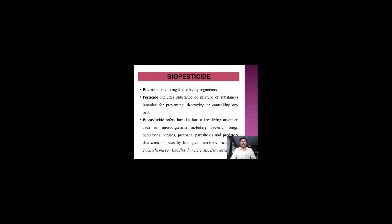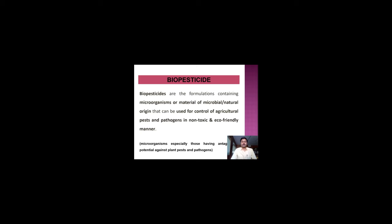Examples include Trichoderma, a well-known biocontrol agent, and Bacillus thuringiensis, used for controlling plant-eating insects. Beauveria is also a fungus used to control insect pathogens in agricultural fields. Biopesticide can be defined as a formulation based on microorganisms or material developed from microbial or natural origin, used for controlling agricultural pests and pathogens in an eco-friendly or non-toxic manner. Those microorganisms having antagonistic potential against plant pests or pathogens are used.